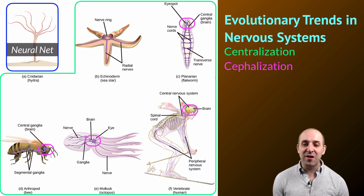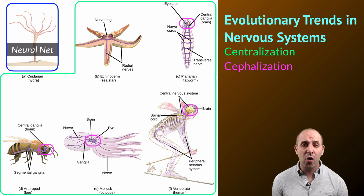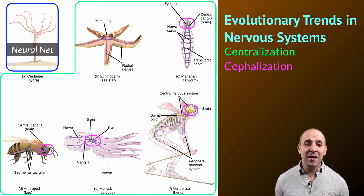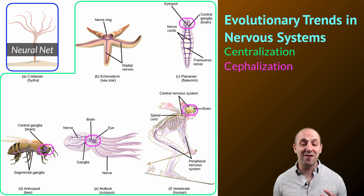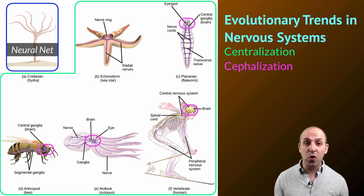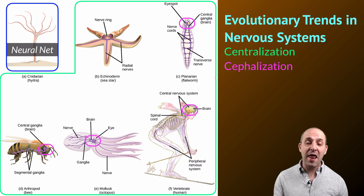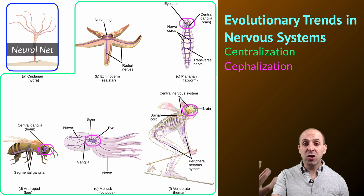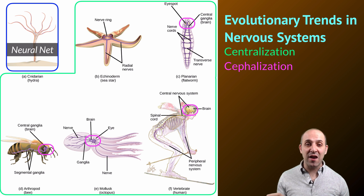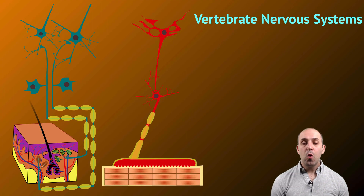The advantages of centralization and cephalization are probably clear, but let's pause and talk about them anyway. What's happening when we centralize and cephalize our nervous systems is we're increasing the amount of coordination and control that our nervous systems can play in integrating incoming sensation and then generating responses as a result.